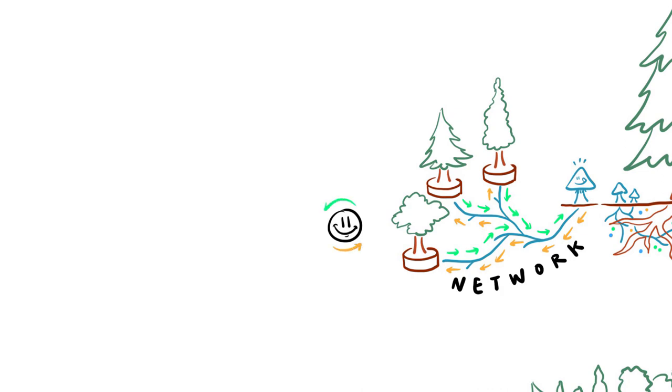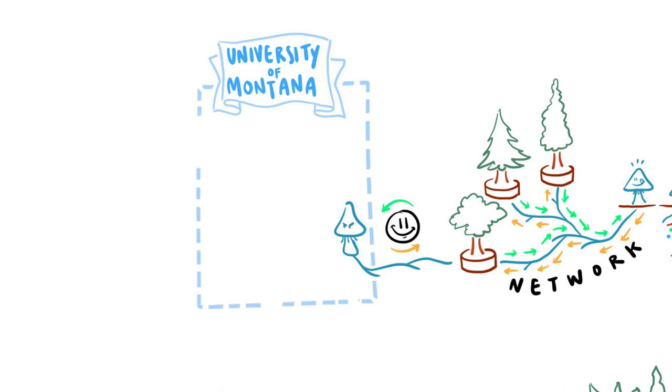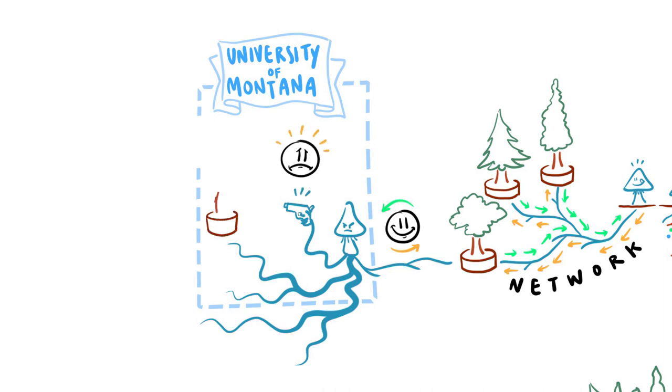While we often consider interactions between trees and their fungal partners as beneficial, a group of scientists at the University of Montana have found that connections to other trees via fungal partners may not always be such a good idea. At times it might even weaken trees and make them more susceptible to threats such as drought.